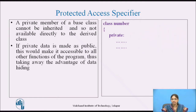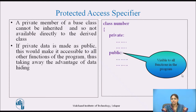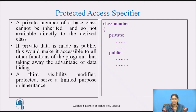If the private data is made public, it would make it accessible to all other functions of the program, thus throwing away the advantage of data hiding. All public data is available to all functions in the program, which loses the advantage of data hiding. So we have a third visibility label called protected, which serves a limited purpose in inheritance.